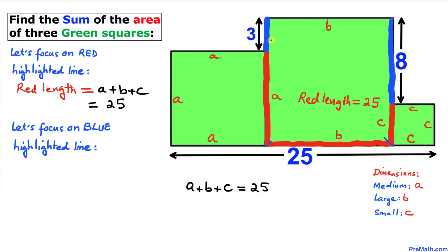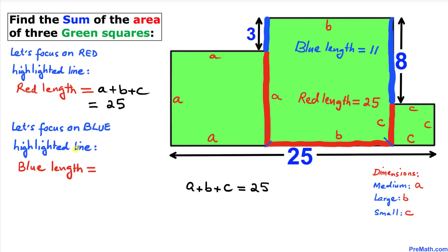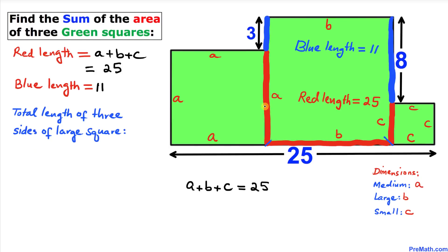Now let's focus on the blue highlighted line on this side. This is 3 units and this one is 8, so 3 plus 8 gives us 11 units. So the length of the blue line is 11.